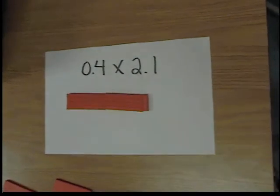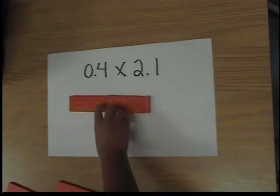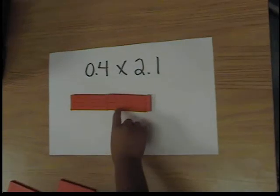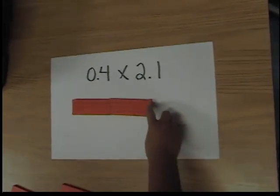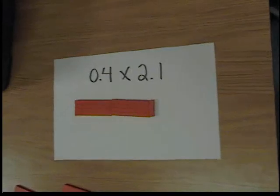Then you add them together and that's your answer, which would be 1, 2, 3, 4, 5, 6, 7, 8... 0.8, 1, 2, 3, 4, 0.84.